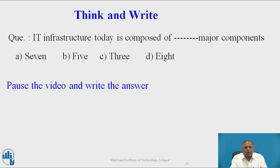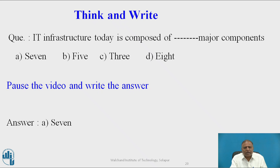Now a question for students: IT infrastructure today is composed of how many major components? Option A: 7, Option B: 5, Option C: 3, Option D: 8. The correct answer is 7 — IT infrastructure today is composed of 7 major components.